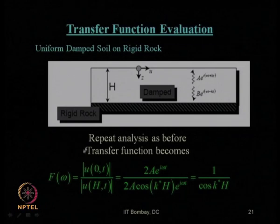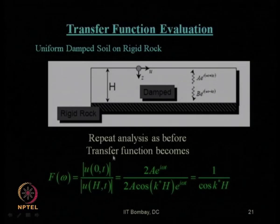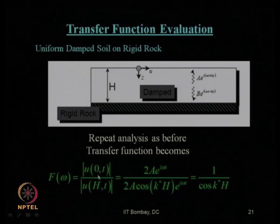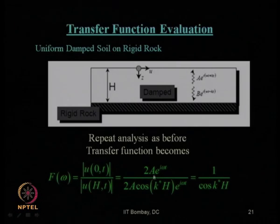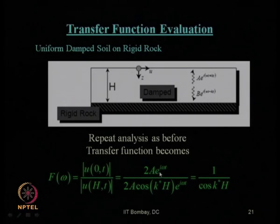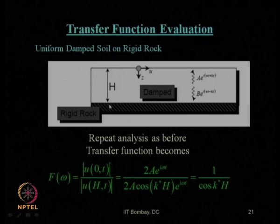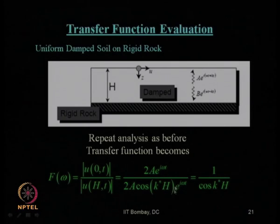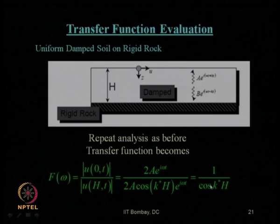Knowing the complex wave number K*, we repeat the analysis as before for the undamped case. The transfer function — the ratio of displacement at ground surface to displacement at bedrock level — now uses K*H instead of KH. On simplification, this gives 1/cos(K*H) instead of 1/cos(KH) for the undamped case. The only change is K becomes K* when going from undamped to damped.